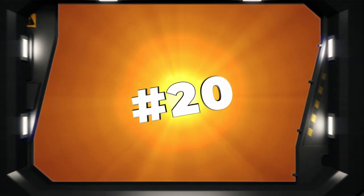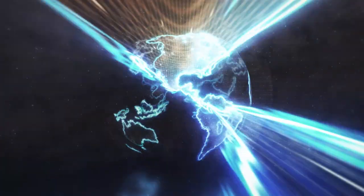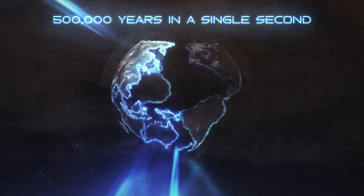Number 20. The Sun's energy output is so powerful that it could provide energy for the entire Earth for over 500,000 years in a single second.